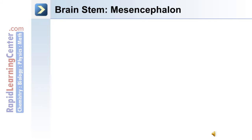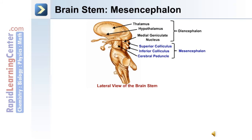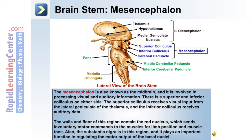Caudal to the diencephalon is the mesencephalon, also known as the midbrain, which includes the superior and inferior colliculus as well as the cerebral peduncle. It is involved in processing visual and auditory information. The superior colliculus receives visual input from the lateral geniculate of the thalamus, while the inferior colliculus receives auditory data. The red nucleus sends involuntary motor commands for limb position and muscle tone, and the substantia nigra regulates motor output of the basal nuclei and is involved in Parkinson's disease.